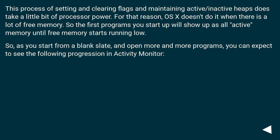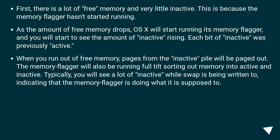This process of setting and clearing flags and maintaining active/inactive heaps does take a little bit of processor power. For that reason, OS X doesn't do it when there is a lot of free memory. So the first programs you start up will show up as all active memory until free memory starts running low. As you start from a blank slate and open more and more programs, you can expect the following progression in Activity Monitor: first, there is a lot of free memory and very little inactive. As free memory drops, OS X will start running its memory flagger, and you will start to see the amount of inactive rising.